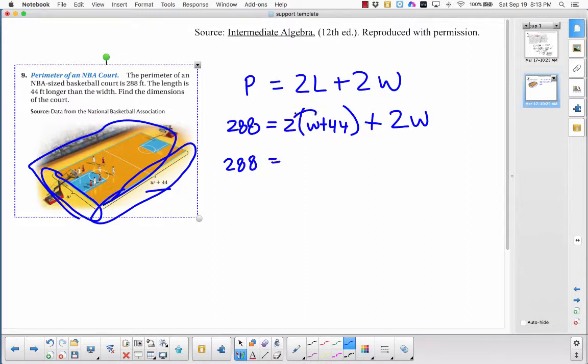So I would use the distributive property. So it would be 2W plus 88 plus 2W. And then I would add the two Ws, so that would be 4W plus 88 equals 288.